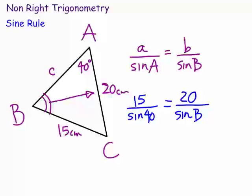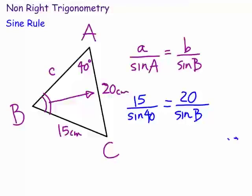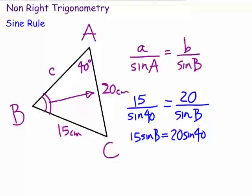So how are we going to solve this? The easiest way with all proportion equations is just to cross-multiply. So we say 15 times sine B is equal to 20 times sine 40. So we'll just set that equation up: 15 times the sine of B is equal to 20 times the sine of 40. Now what do we do? We need to find angle B, and so we need to isolate the B. So the first part would be: sine of B equals 20 sine 40 over 15.